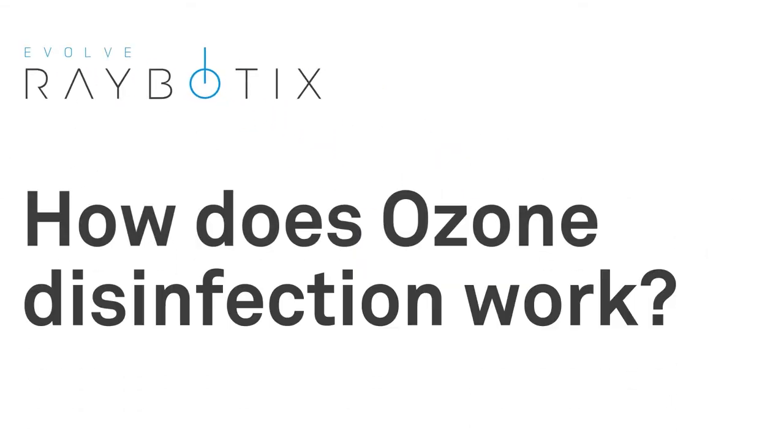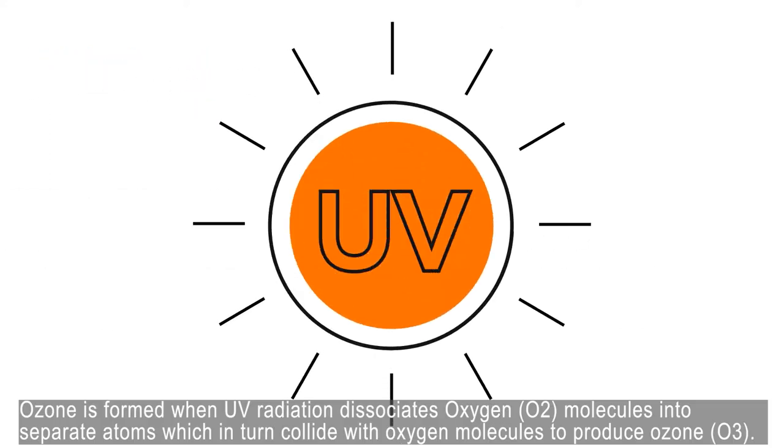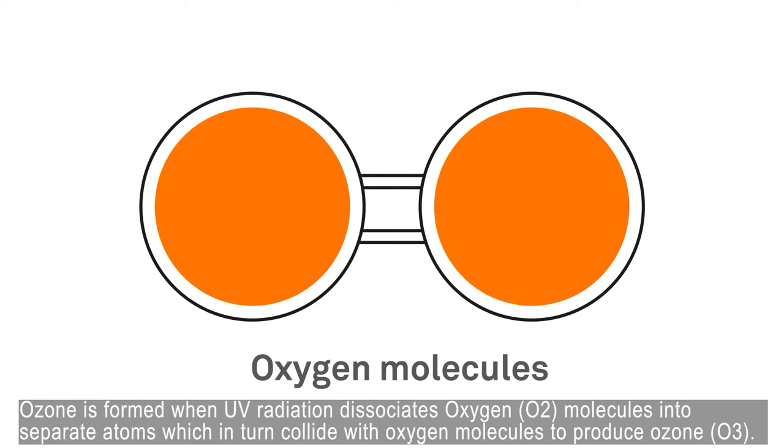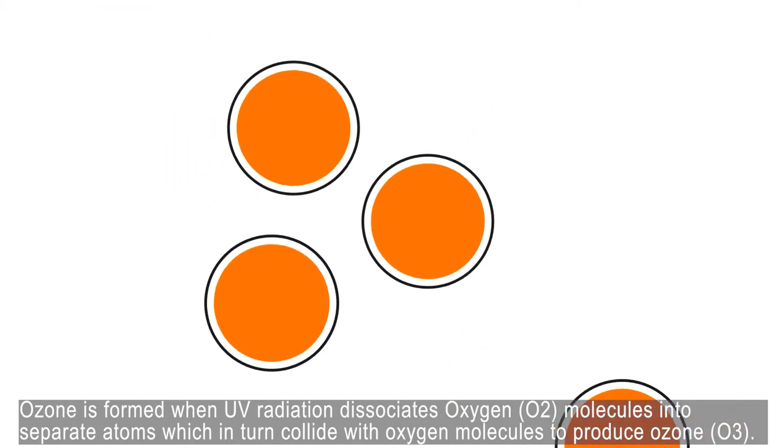How does ozone disinfection work? Ozone is formed when UV radiation deconstructs oxygen molecules into separate atoms, which in turn collide with other oxygen molecules to produce ozone.